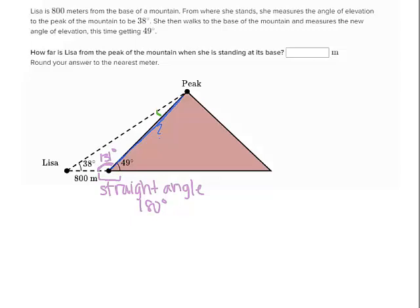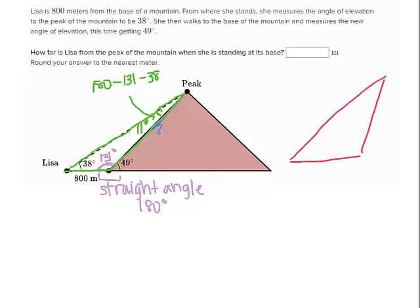If I want this angle, you should see that I've got a triangle right here. We know that triangles make 180 degrees as well. So this angle is going to be 180 minus 131 minus 38, and we get the remaining angle, which is 11 degrees.